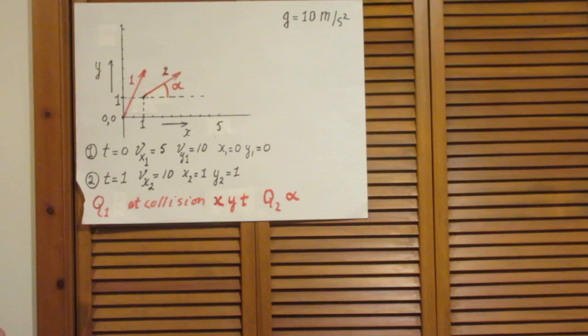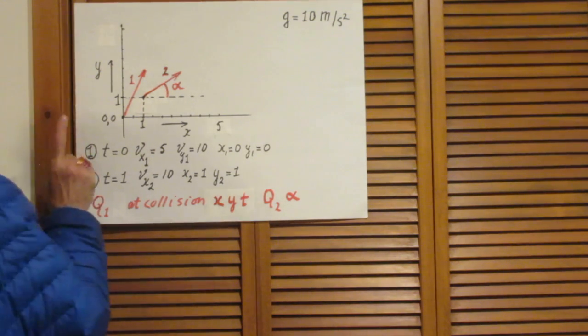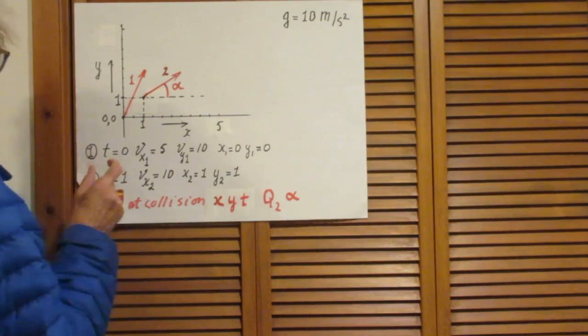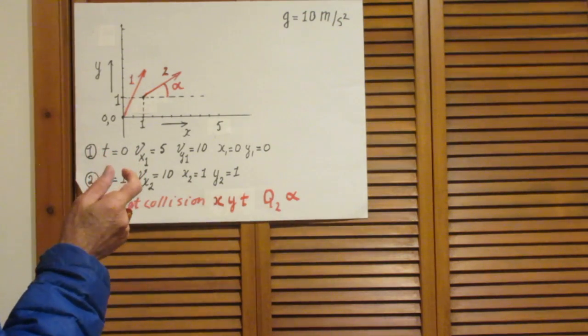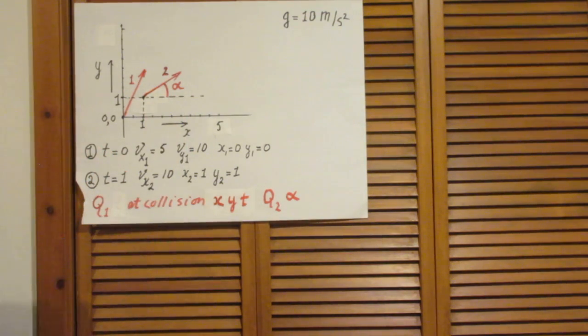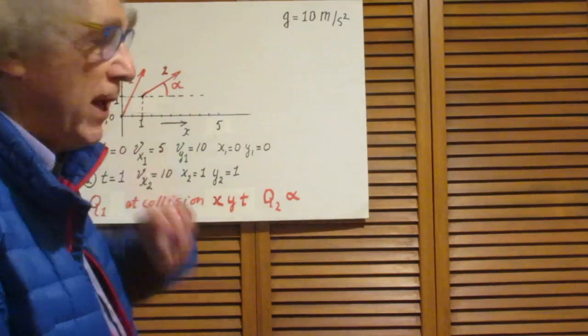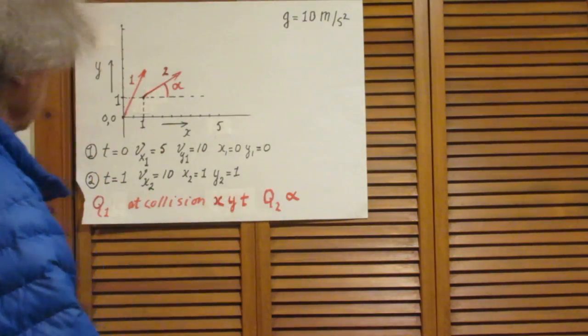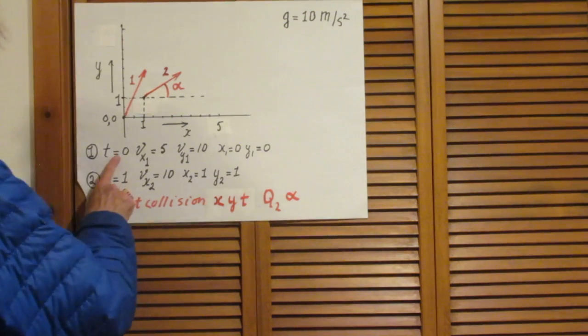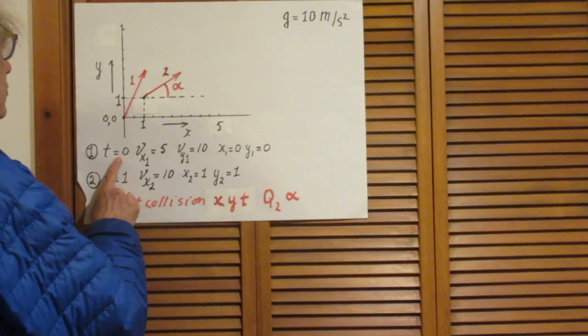There are two objects, two small rocks that are going to throw up in the sky. We will ignore all air drag and we will use that g is 10 meters per second squared. At time t equals 0,